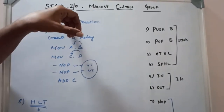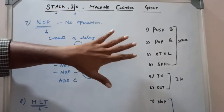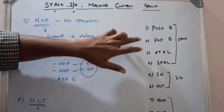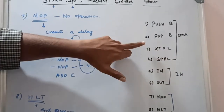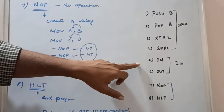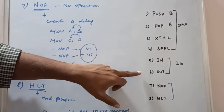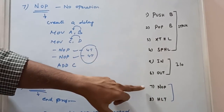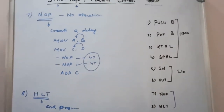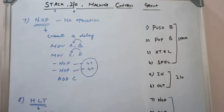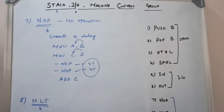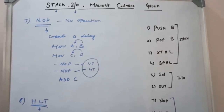In summary, the stack group has four instructions: PUSH B, POP B, XTHL, and SPHL. The I/O function has IN and OUT. The machine control group has NOP and HALT instructions. Thanks for watching — please subscribe to my channel.